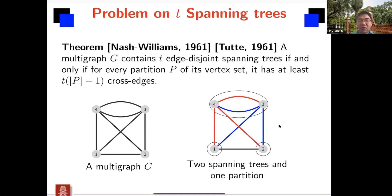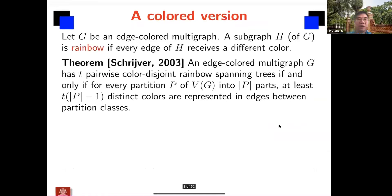Now I will move to the colored version. This is a less well-known theorem by Stringer in 2003. It says if you have an edge-colored multi-graph, you ask the same question — this time you consider T color-disjoint rainbow spanning trees. So you have T spanning trees that are not only edge-disjoint, but each one uses edges of distinct colors. The necessary condition is that for any partition P, you still need T times (|P| − 1) distinct colors among the cross edges. And if this holds for any P, it is also sufficient.